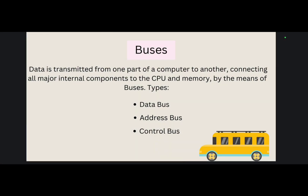A bus is a high-speed internal connection. Buses are used to send control signals and data between the processor and other components. There are three kinds of buses: the first is the data bus, the second is the address bus, and the third is the control bus.